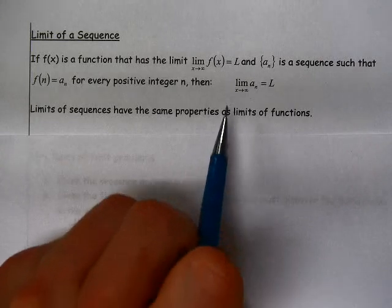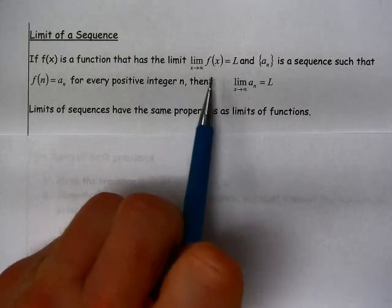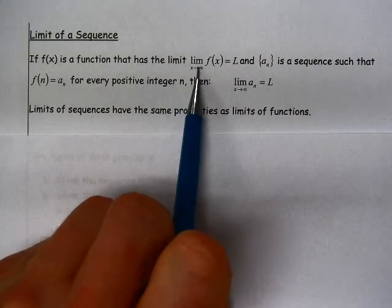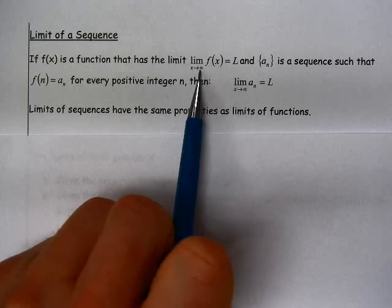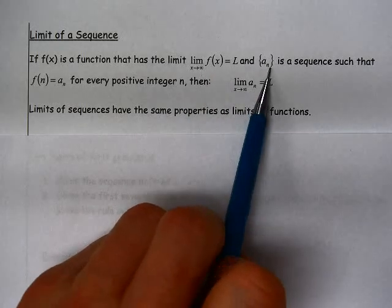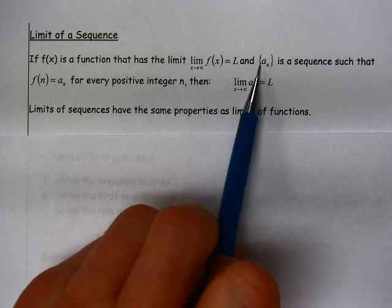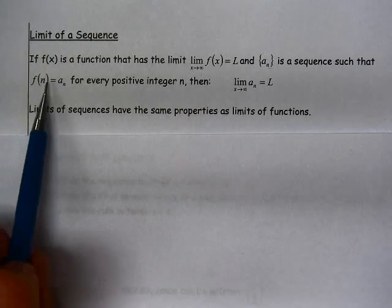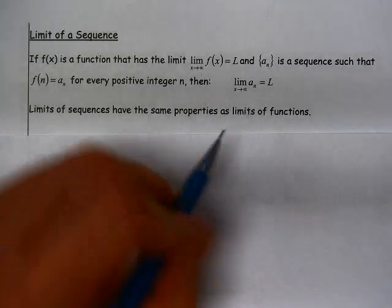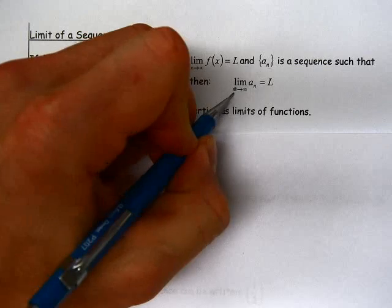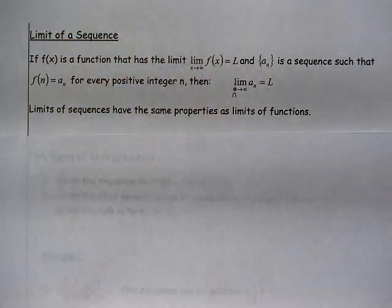So I actually noticed just now as I was looking at this, this is still right. When we talk about a function, it's f of x as x approaches infinity. If we can write this sequence as a function of n, then it would be the limit as n, not as x, but as n approaches infinity.